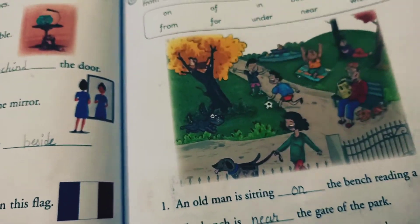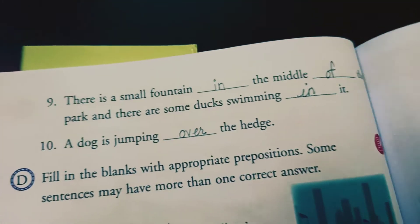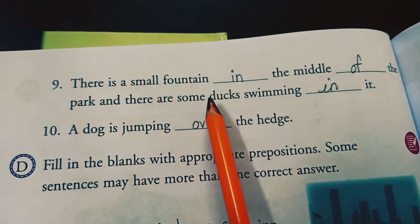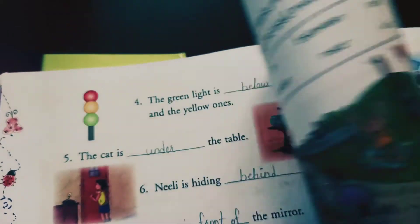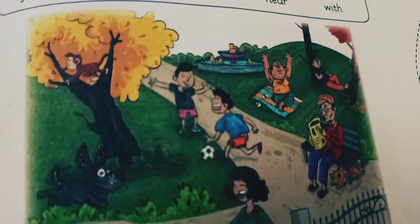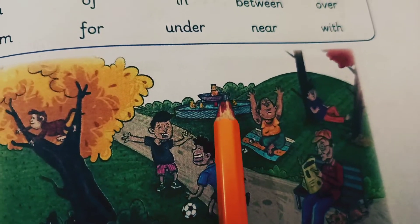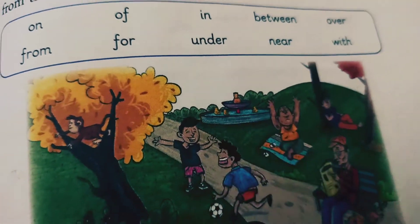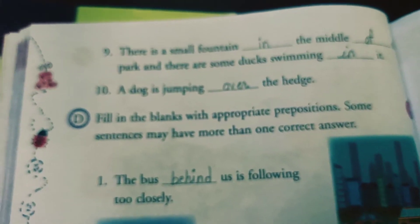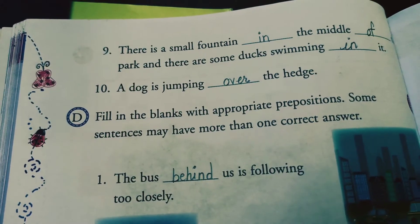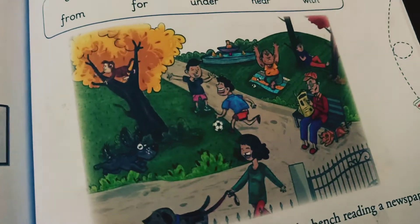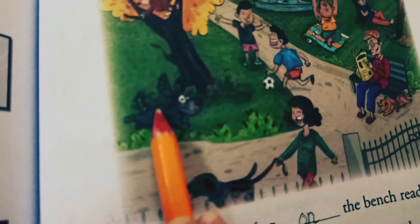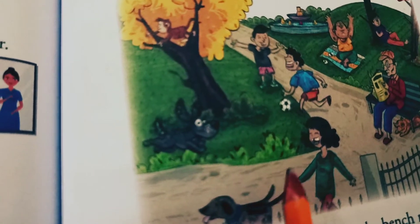Did you understand everyone? There is a small fountain in the middle of the park and there are some ducks swimming in it. A dog is jumping over the hedge — he is jumping over the hedge.